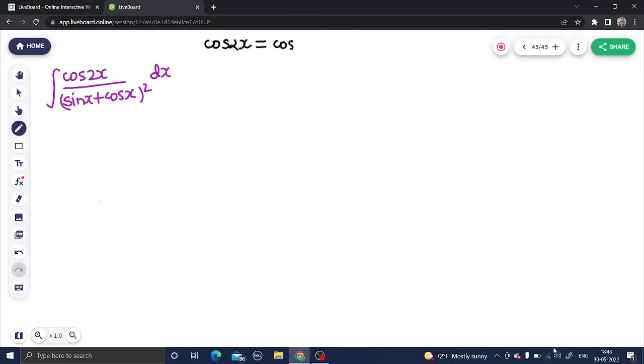First one is cos square x minus sine square x. I don't need to write the other ones because if you replace this cos square x by 1 minus sine square x you will get a different formula entirely in sine.